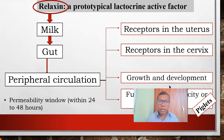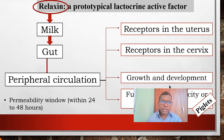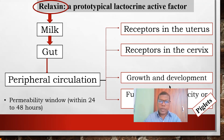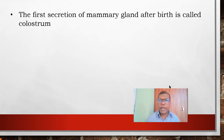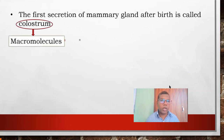We also have to consider the quantity and quality of colostrum from the mother. Sometimes due to disease conditions such as mastitis, the mother may not be able to provide proper colostrum, which affects the piglet's growth in future. The first secretion of the mammary gland after birth is colostrum, and it contains macromolecules, immunoglobulins, antibacterial compounds, protein, fat, and other bioactive compounds.